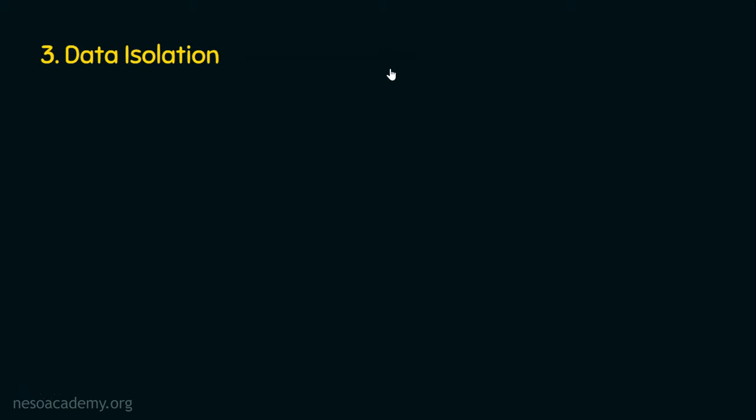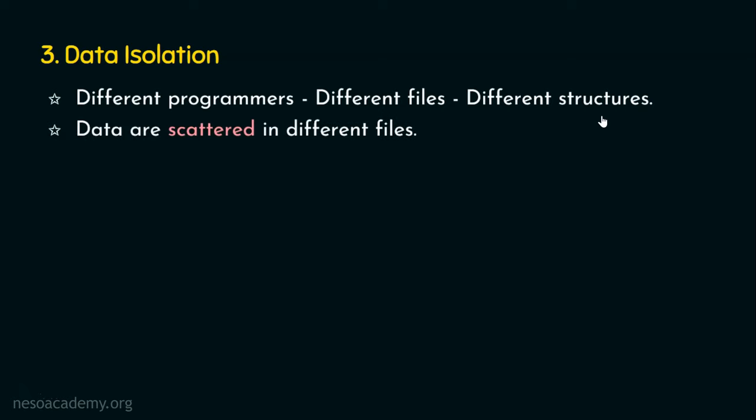When we want easy access and easy retrieval of data, a more responsive data retrieval system is needed — which file systems cannot offer, but DBMS can do easily. Let's now move to the third point: data isolation. Software programs use different files with different structures stored in different locations, so data is scattered across different files. Isolating the real data we require is a problem. But in a database management system, all records are stored in a central place — the database — so changes in one place update all associated places automatically.